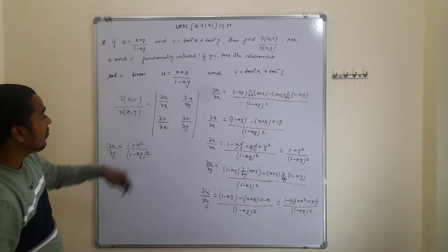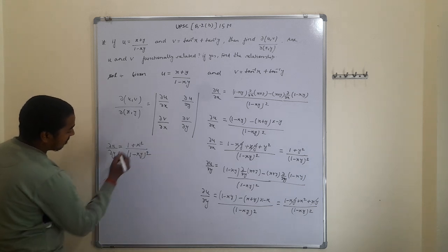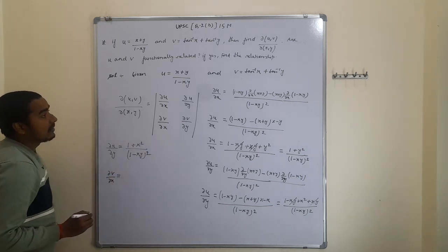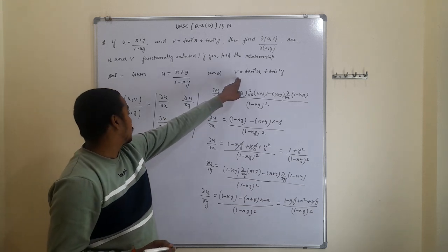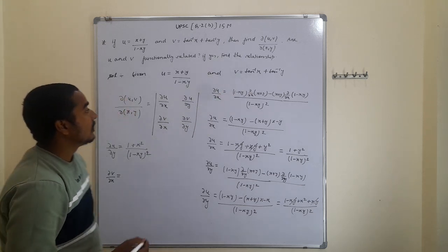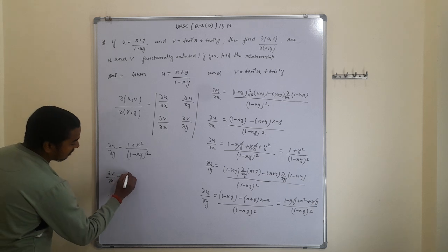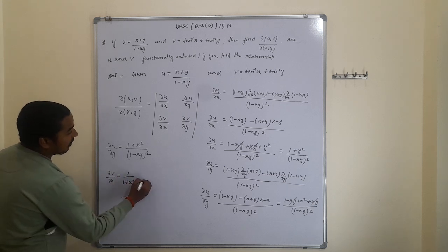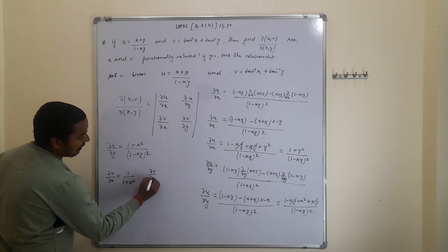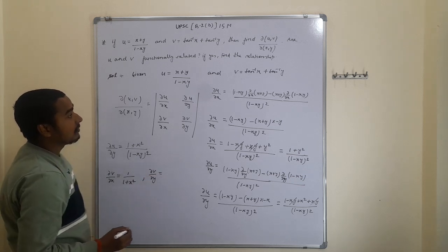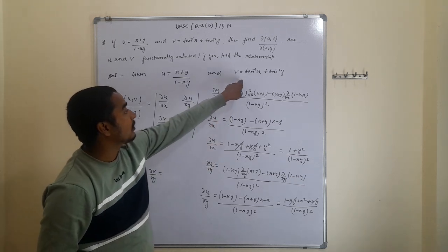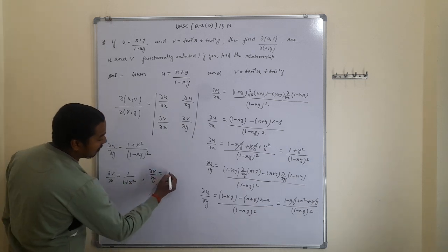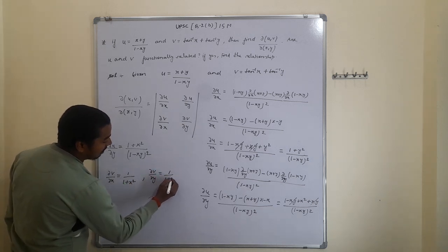Now we differentiate v = tan⁻¹(x) + tan⁻¹(y). Differentiating with respect to x: ∂v/∂x = 1 / (1 + x²). Differentiating with respect to y: ∂v/∂y = 1 / (1 + y²).